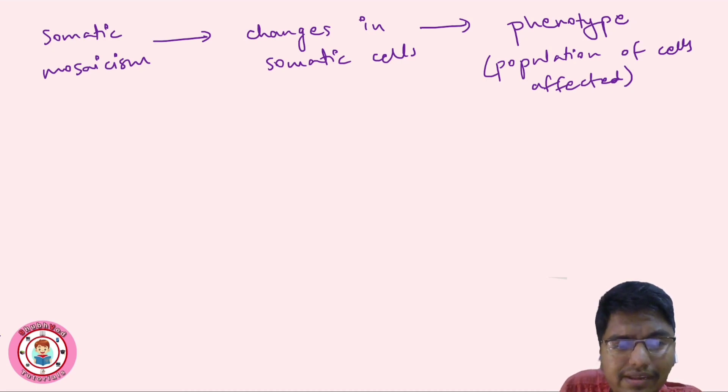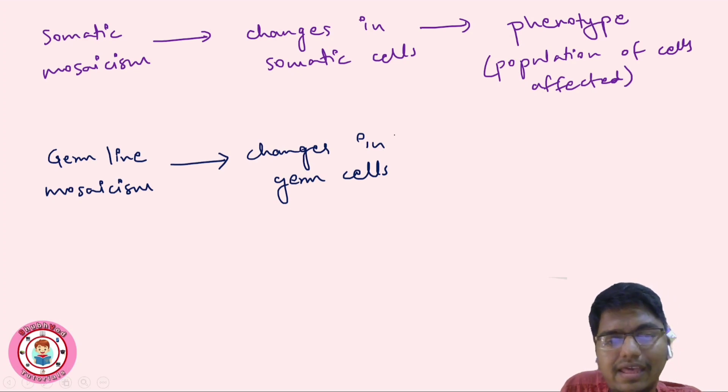If the changes are in germline mosaicism, what we will see here are changes in germ cells. We will be having mutations or epigenetic changes. Anything can happen.